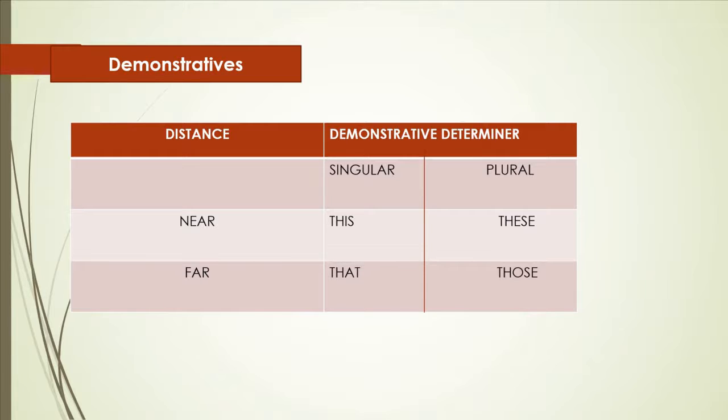For example, if it is singular, if the object is near to you, you are using this. If it is in plural, you are using these, T-H-E-S-E. And if the object is far from you, you are using that for singular purpose, and for plural you are using those.